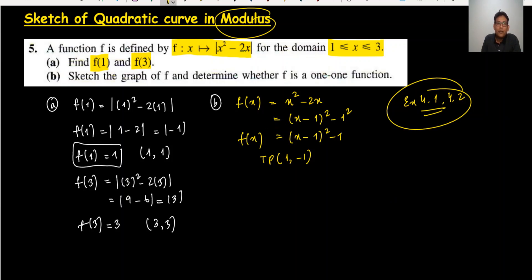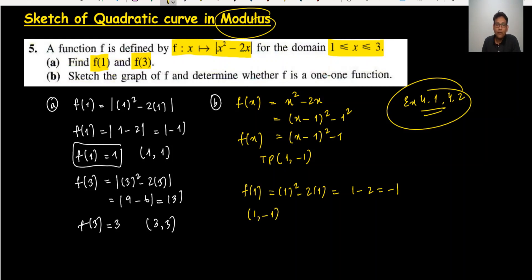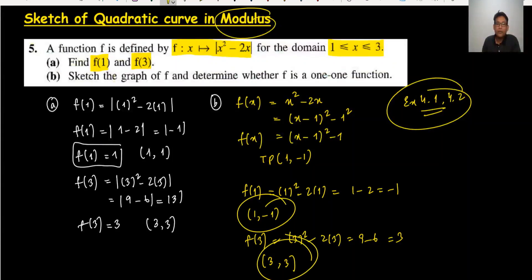One more thing: when you substitute the domain values, f(1) = 1 squared − 2 times 1 = 1 − 2 = −1, so the coordinate is (1, −1). When you substitute 3, it's 3 squared − 2 times 3 = 9 − 6 = 3, so the coordinate is (3, 3). The domain is 1, 2, and 3.